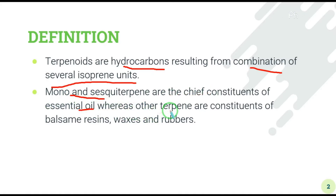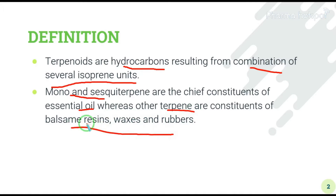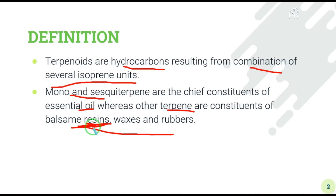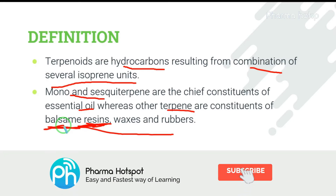Mono and sesquiterpenes are the starting point of essential oils. Terpenes are also constituents of balsams, resins, waxes, and rubbers. Resins are the viscous organic mixtures released by plants for their protection — a viscous substance that the plant releases.